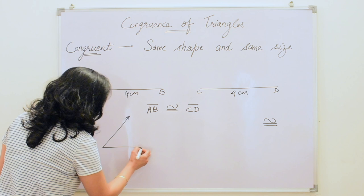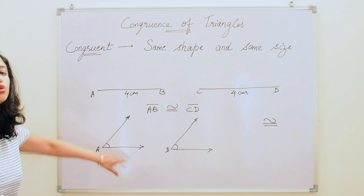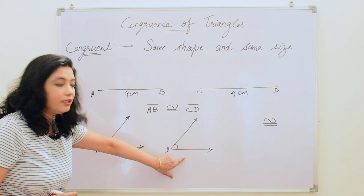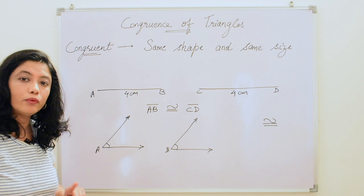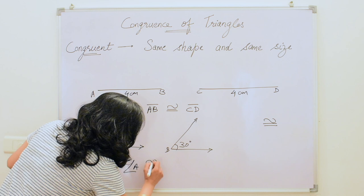Now let us see when angles are congruent. Here we have angle A and angle B. These are rays, so we don't consider the length of the rays because rays are indefinite. When the measure of one angle is equal to the measure of the other angle, both the angles are congruent. So for both angles to be congruent their measure should be equal — if this is 30 degrees and this is also 30 degrees, then angle A is congruent to angle B.